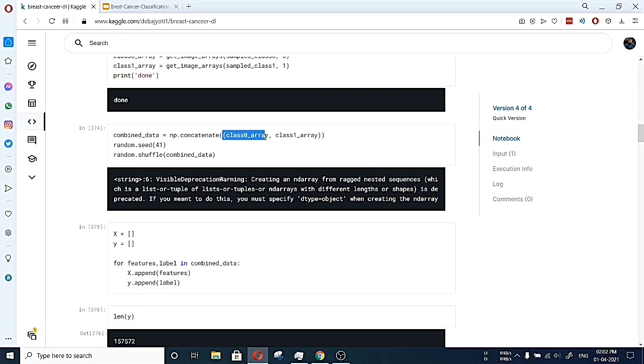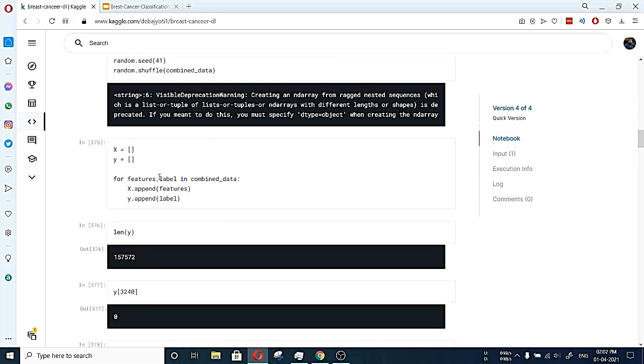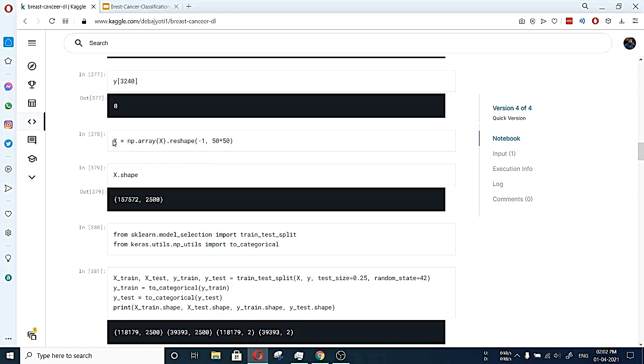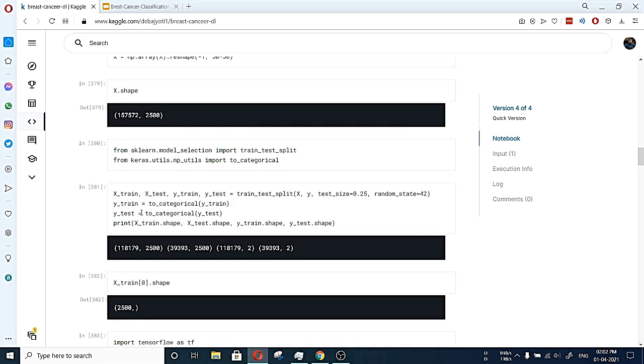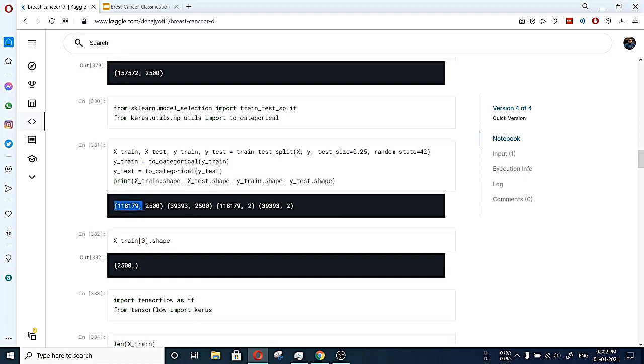Before that, we just concatenated the class 0 array and class 1 array for training purpose. And after that, we divided the features and labels from each images in combined data in X and Y. Again we reshaped all the images from 2 dimensional to 1 dimensional. Here is the total training set and the 1 dimensional size is 2500 because of 50 by 50. Here is the total training set. And then we imported scikit learn train_test_split and we imported Keras to categorize the labels. And we passed them and we formed our X_train model, X_test model, Y_train model and Y_test model. And here are the shapes of all of them.